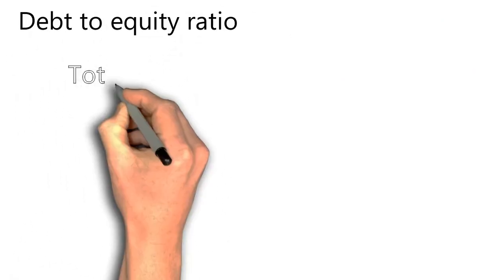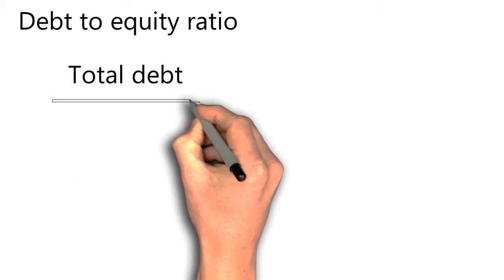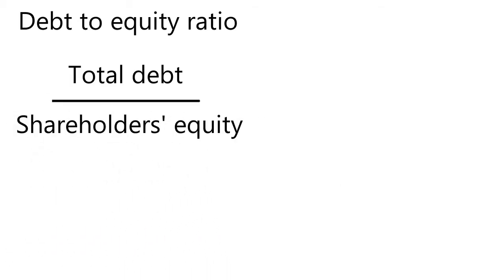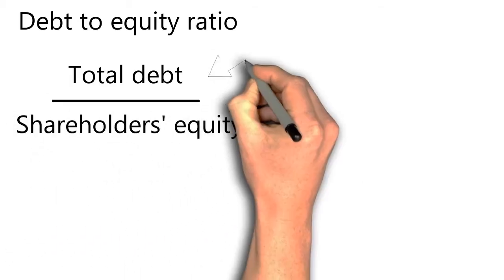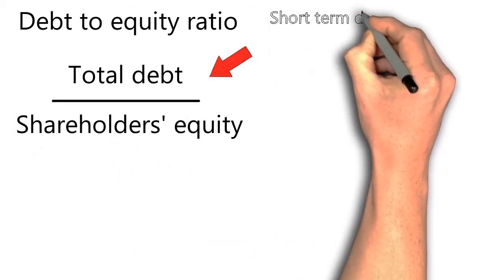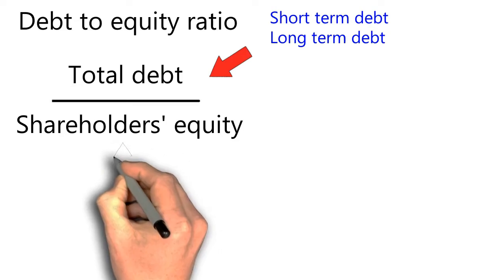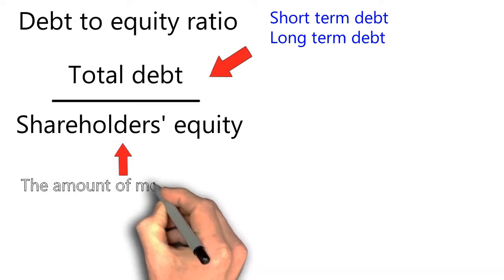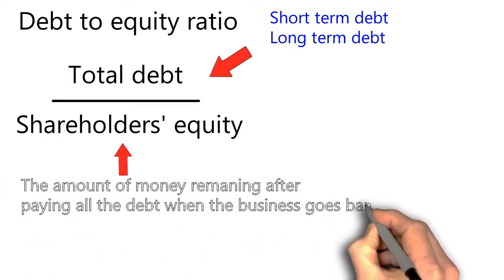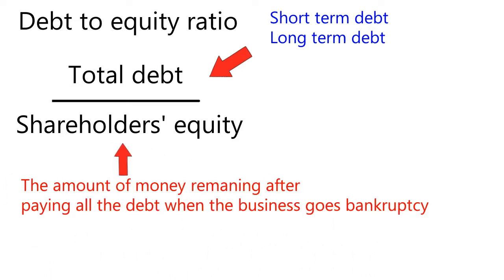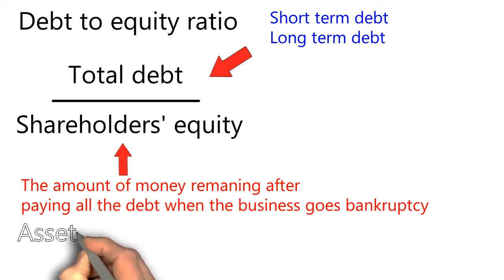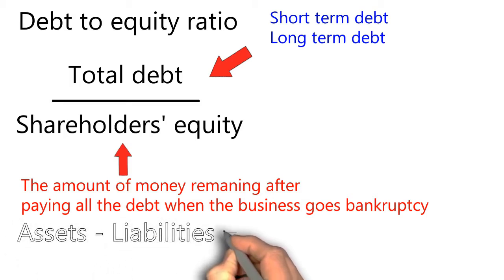What is the debt to equity ratio? Debt to equity has the following formula: total debt divided by shareholders' equity. Total debt here includes short-term and long-term debt. Shareholders' equity is the amount of money remaining after paying all the debt when the business goes bankrupt. Equity will be equal to assets minus liabilities.